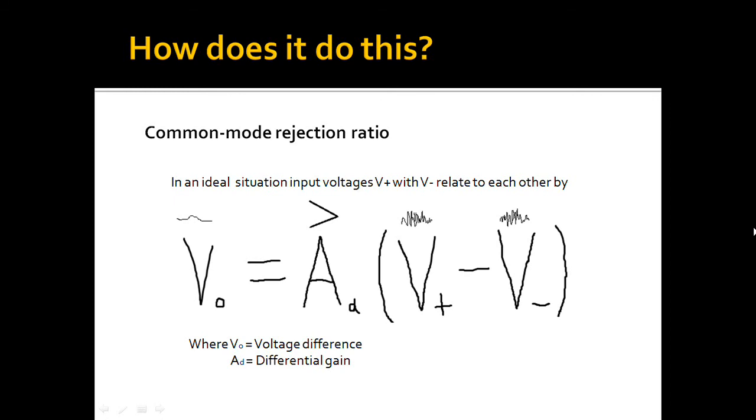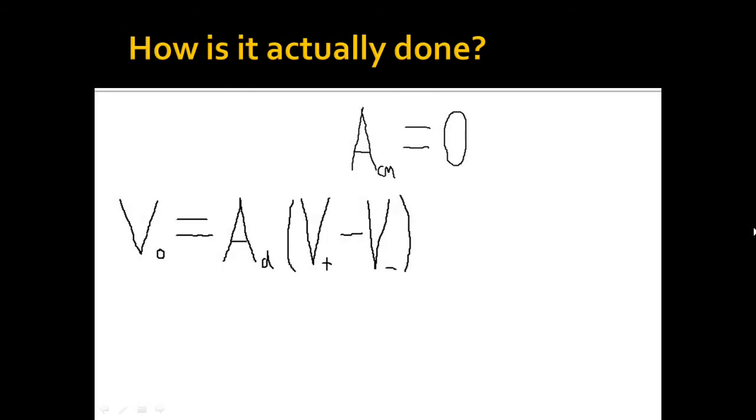In reality, however, an addition to this equation is necessary. The ideal model predicts that the common mode gain, denoted here as ACM, has zero effect. In reality, this is not easily attainable.